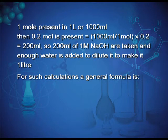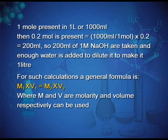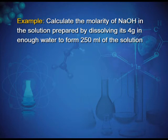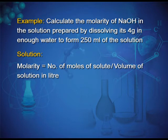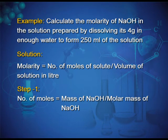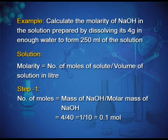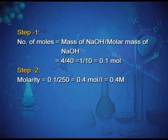For dilution calculations, a general formula is also used: M₁V₁ = M₂V₂, where M and V are molarity and volume respectively. Example: calculate the molarity of NaOH in a solution prepared by dissolving 4 g in enough water to form 250 ml of solution. Molarity = number of moles of solute / volume of solution in litres. Step 1: moles of NaOH = 4 / 40 = 0.1 mol. Step 2: molarity = 0.1 / 0.250 = 0.4 mol per litre. So the final answer is 0.4 M.